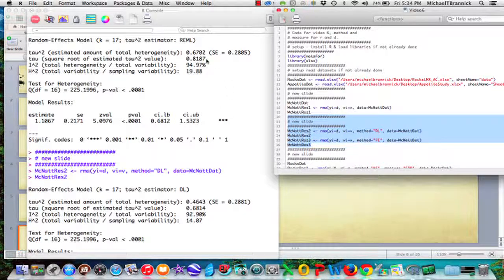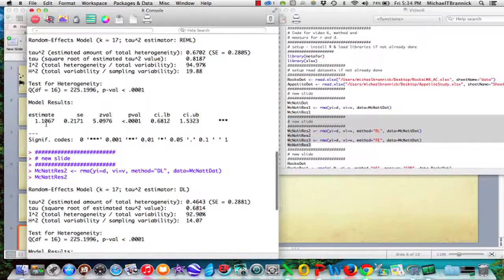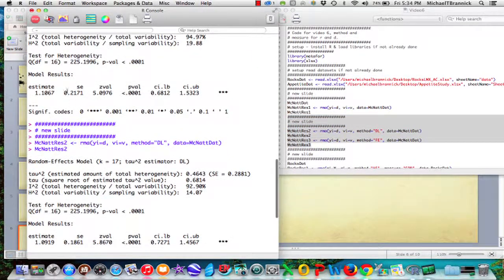Estimate is 1.09. And it's 0.73 to about 1.46. So we went from restricted maximum likelihood to Dersimonian and Laird. In the REML we have tau of 0.82. And we got a smaller tau of 0.68 here. We have a similar overall effect size estimate. So 1.11 versus 1.09. And this one goes from 0.68 to 1.5. This one goes from 0.73 to about 1.46. Actually that's 1.53. So this estimate is wider because you have a bigger value of tau there.